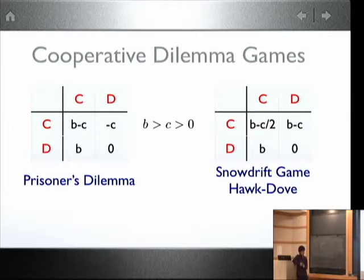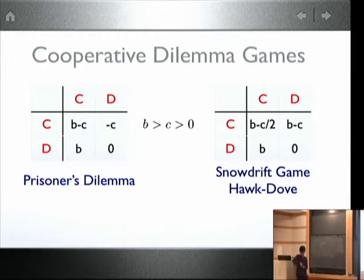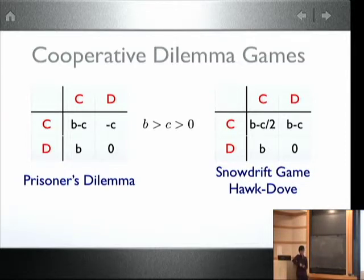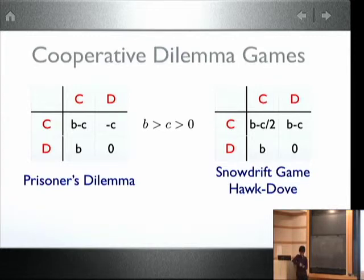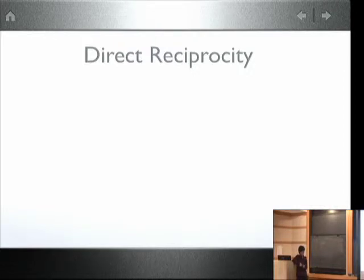It's not obvious how cooperation can arise. For cooperation to evolve you need various mechanisms. People have proposed kin selection — worker bees are willing to forego reproduction to raise the queen's children because they are siblings. There's also spatial reciprocity and group selection. I'm going to focus on direct reciprocity.